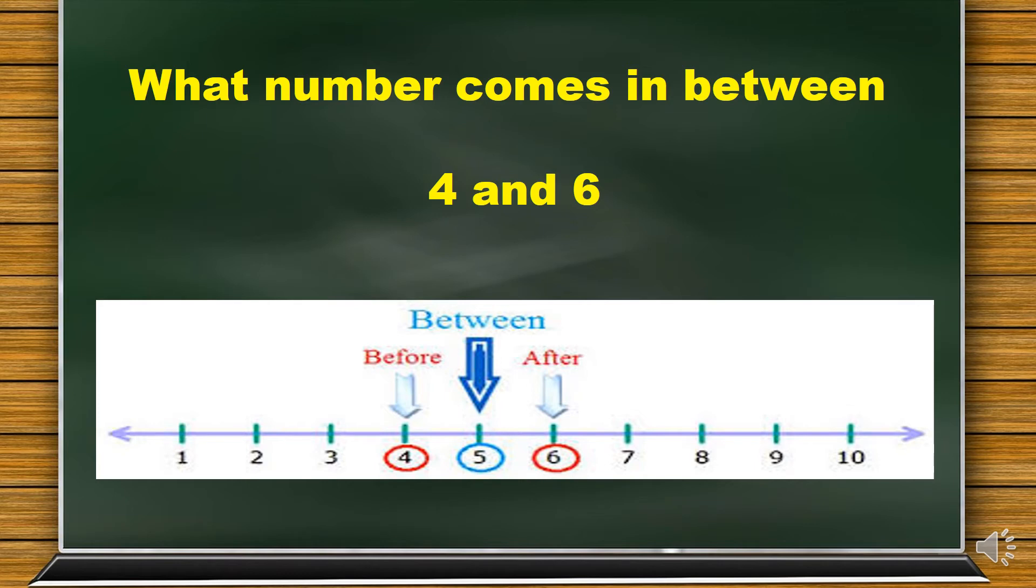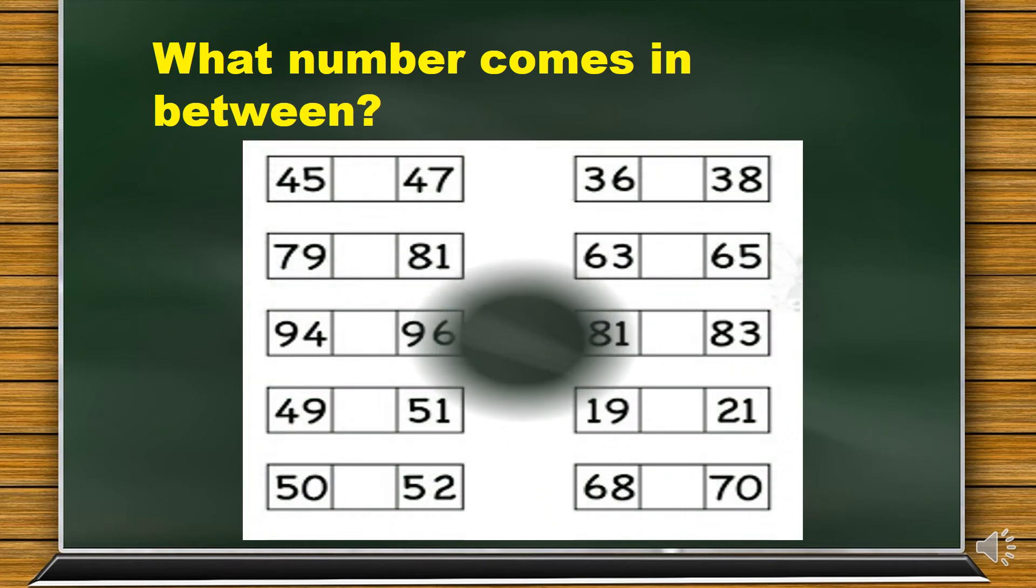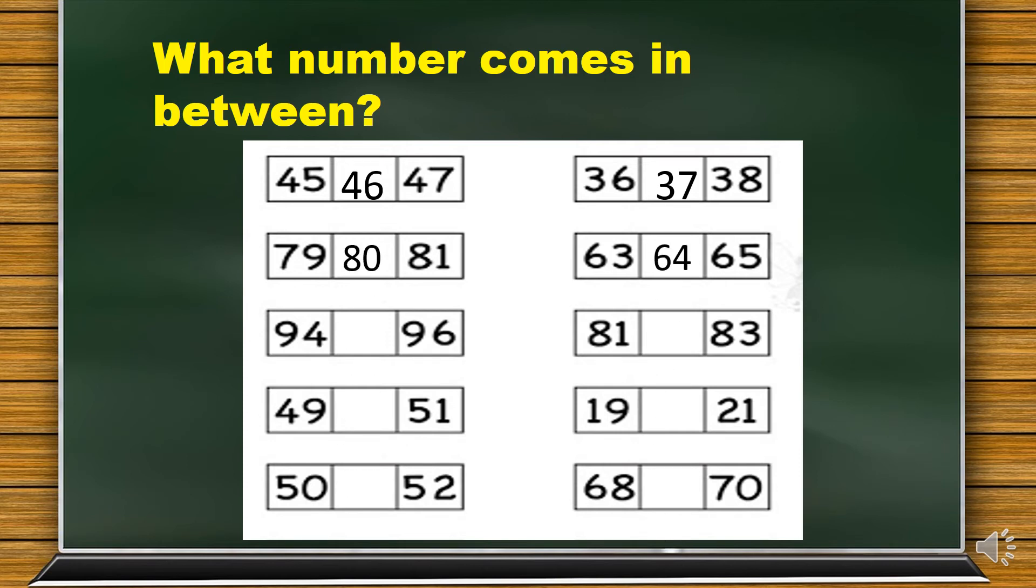What number comes in between 45 and 47? 46. Between 36 and 38? 37. Between 79 and 81? 80. Between 63 and 65? 64. Between 94 and 96? 95. Between 81 and 83? 82.